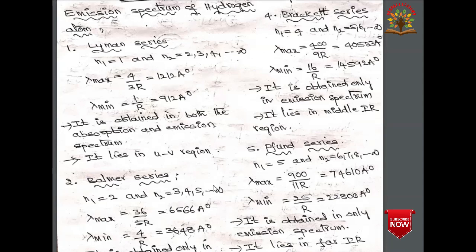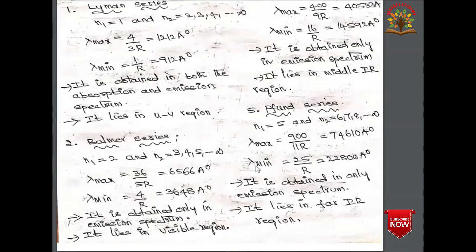The Pfund series is obtained when electron transition takes place from n₂ = 6, 7, 8, ... ∞ to n₁ = 5. The maximum wavelength is 900/(11R) = 74610 Å and the minimum wavelength is 25/R = 22800 Å. It is obtained only in the emission spectrum and lies in the far infrared region.